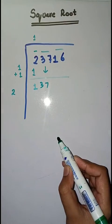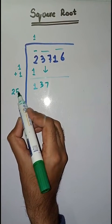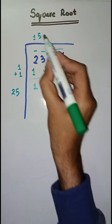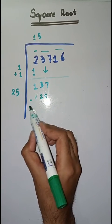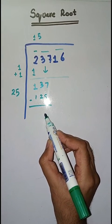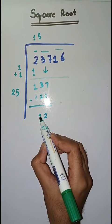So we take a number 5. 25 times 5 is 125. Minus is 2. 7 minus 5 is 2. 3 minus 2 is 1.